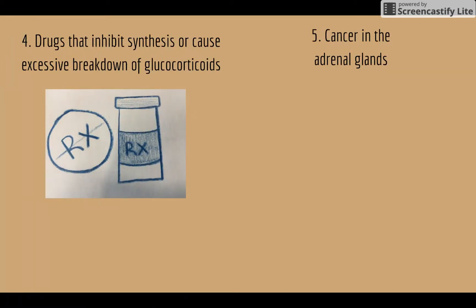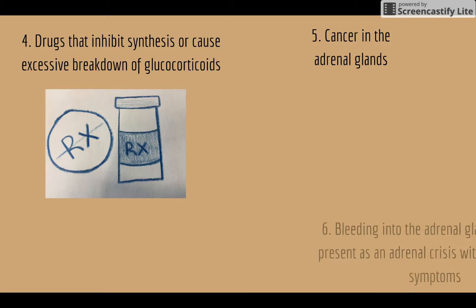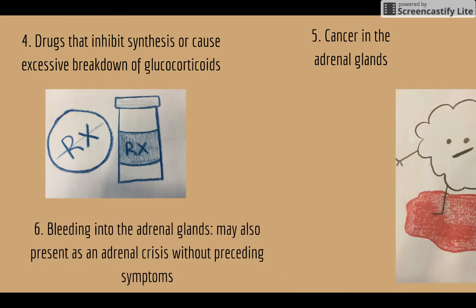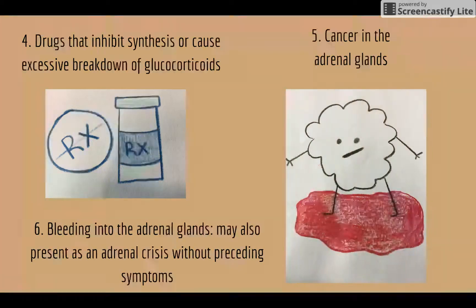Drug-induced glucocorticoid disruption can result in immunodeficiency. Additional risk factors include having or having had cancer in the adrenal glands, and bleeding into the adrenal glands, which may also present as an adrenal crisis without preceding symptoms.